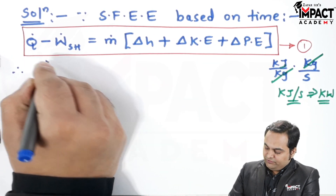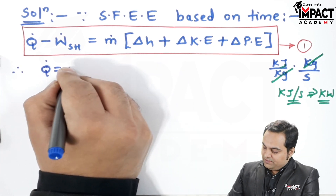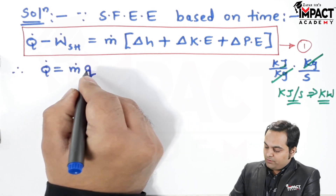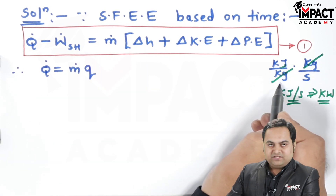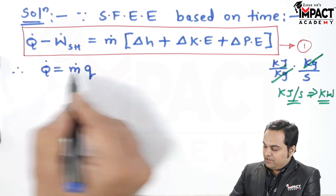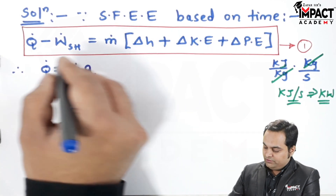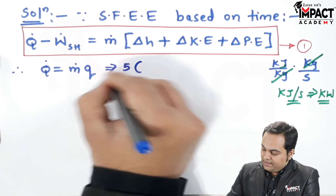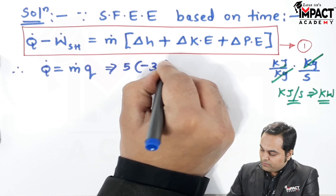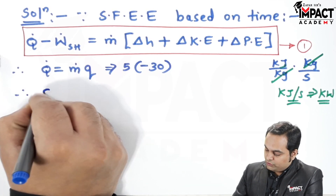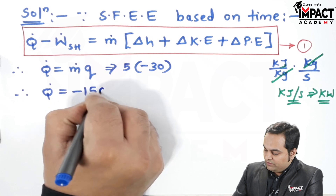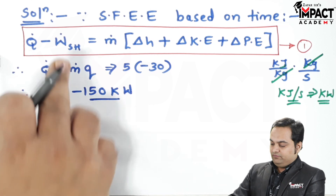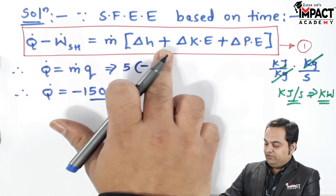The rate of heat transfer Q-dot is given by m-dot multiplied by small q. Small q is in kilo Joule per kg and mass flow rate is kg per second, giving units of kilowatt. The mass flow rate is 5 and q is minus 30 kilo Joule per kg, so Q-dot equals minus 150 kilowatts.